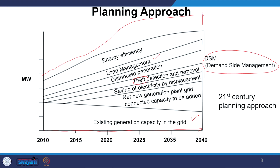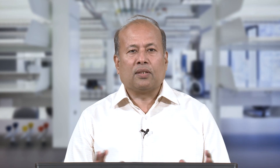Demand side management helps delay investment, which also reduces investment in distribution system planning. Traditional least cost planning minimizes the cost of electricity supply by acquiring resources at the lowest cost, considering all resource costs: construction, operation, sub-transmission, distribution, consumer and environmental cost. System inadequacies to identify include poor voltage regulation, higher system losses, higher equipment failures, bad quality of power supply and no scope for future load growth.